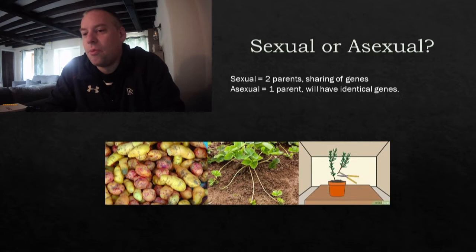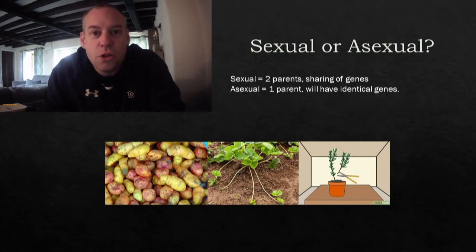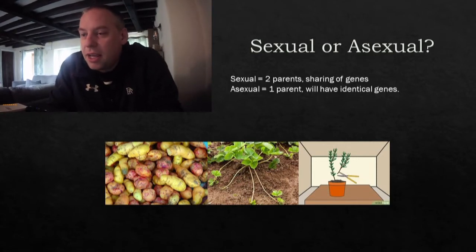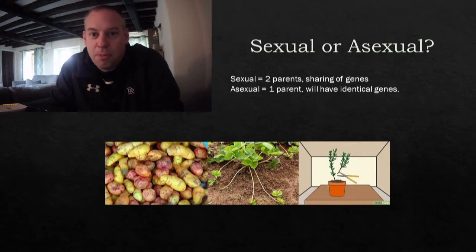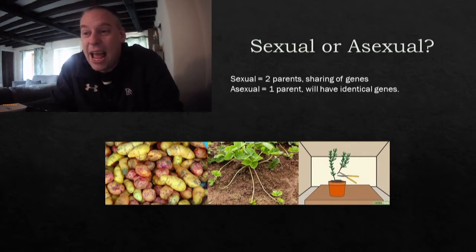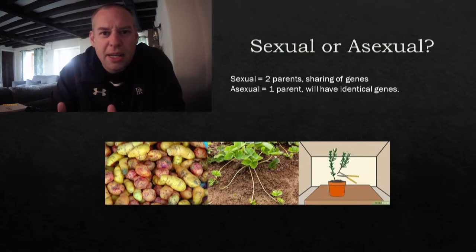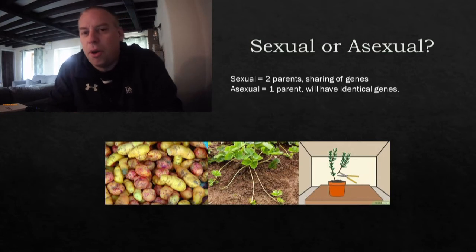We're going to start with the fact that plants can do two types of reproduction. The two types are sexual reproduction and asexual reproduction. We need a quick definition of both.